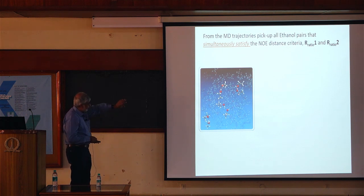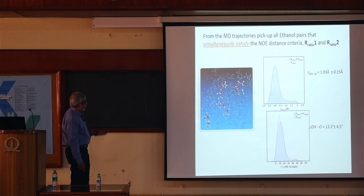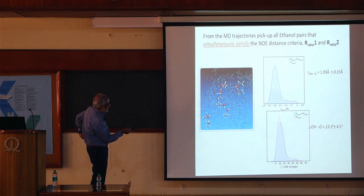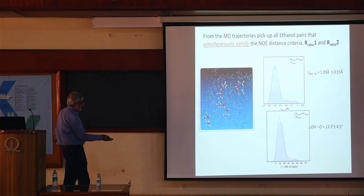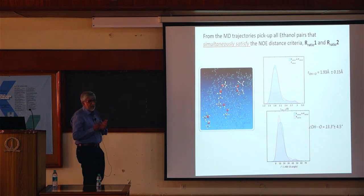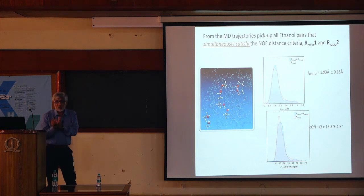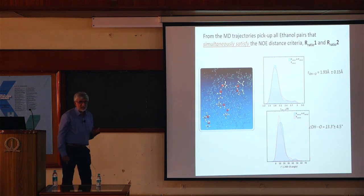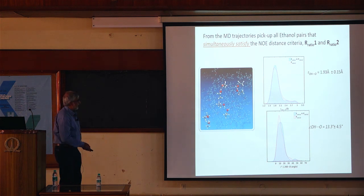For these pairs of molecules, I look at the R_OHO and the O–H–O angle, and find a normal Gaussian distribution with a mean value of 1.9 Angstroms ± 0.15 and an angle of about 13.3° ± 4.5°, which lies close to the centroid values found from our simulations. This gives us confidence in the simulation results, as we are able to verify them experimentally.